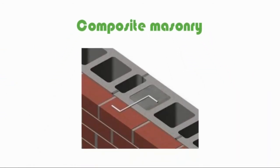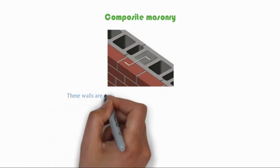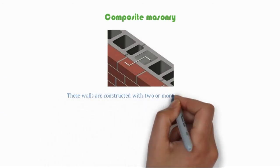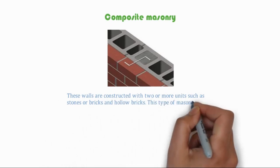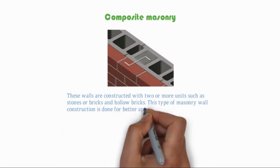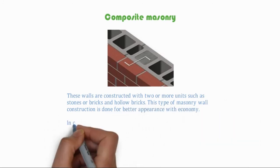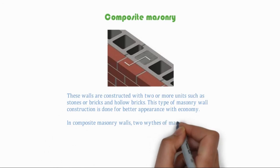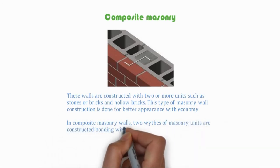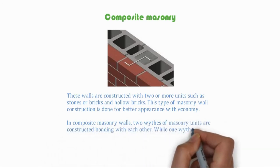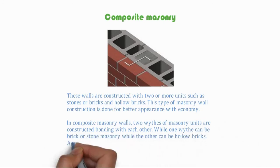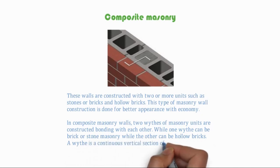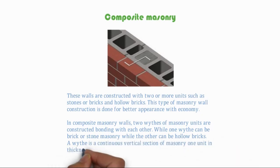Composite masonry walls are constructed with two or more units such as stones, bricks, and hollow bricks. This type of masonry wall construction is done for better appearance with economy. Two widths of masonry units are constructed bonding with each other, while one wythe can be brick or stone masonry and the other can be hollow bricks. A wythe is a continuous vertical section of masonry one unit in thickness.